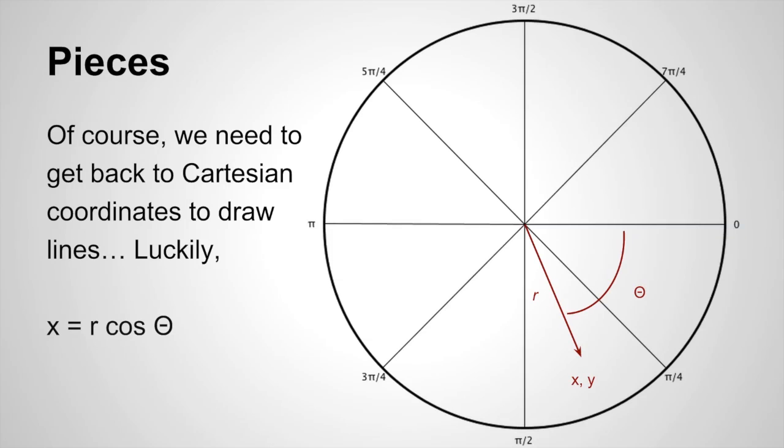Luckily, there are some trig identities for that. I hope you paid attention in trig. We can determine the x coordinate by taking the length r times the cosine of theta, and the y coordinate by taking r times the sine of theta. So if we do those two things, we'll have our coordinates.